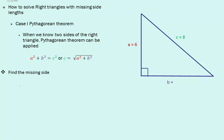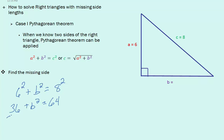We can solve for the missing side of the right triangle we see on the right by using Pythagorean's Theorem. We have a squared, which is 6 in this case, plus b squared, which we're trying to find. And our hypotenuse, which is c squared. If we square both sides, we'll get 36 plus b squared equals 64. If we get b by itself, we can subtract 36 from both sides, and we'll get b squared equals 28.